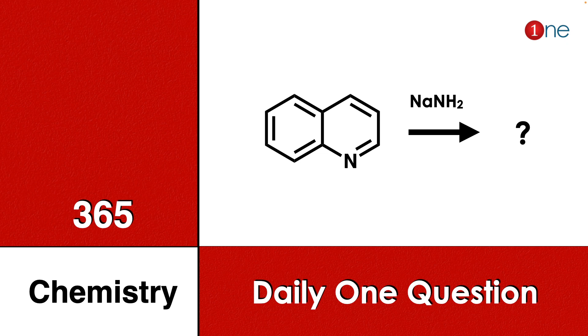Welcome to One Chemistry. This is the 365 chemistry series — daily chemistry for you. Here you have a quinoline system, and you are reacting it with sodamide. You have to find what will be the final product.